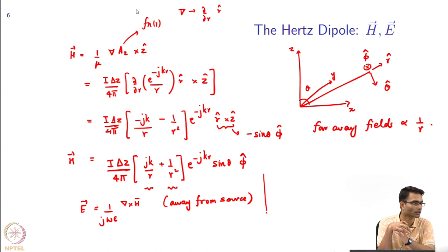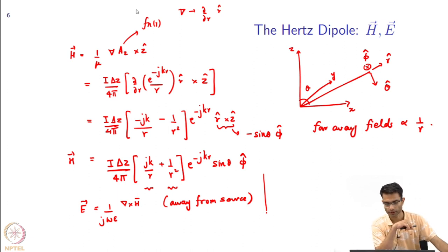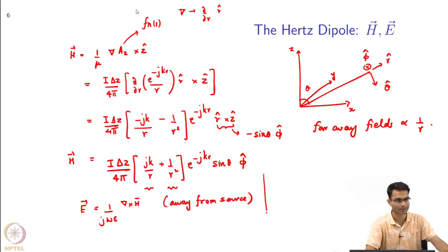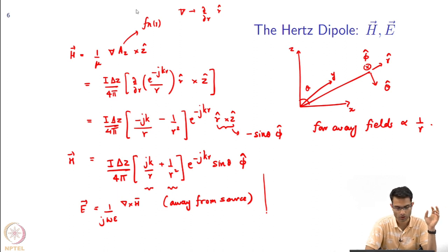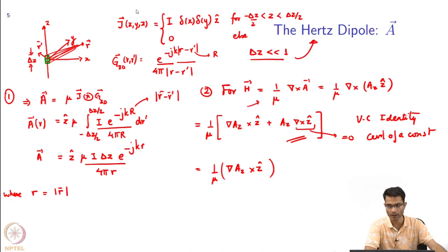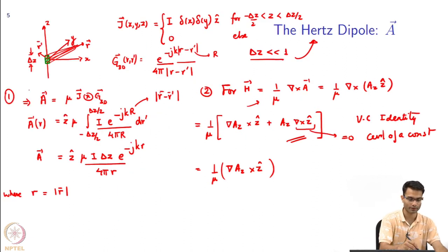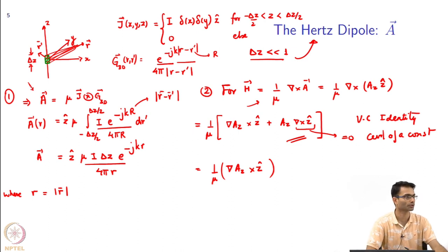We will continue our discussion of the Hertz Dipole. The key thing to remember is that it was a very small current element, and because it was very small you can assume the current is approximately constant. Given the current, we could calculate the A vector using this relation — a convolution of a known current with the Green's function.